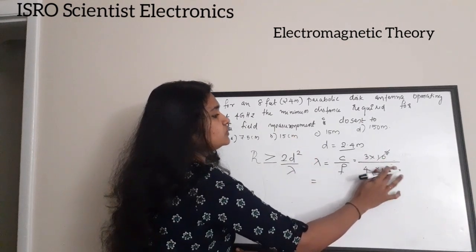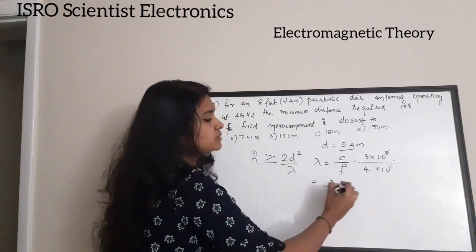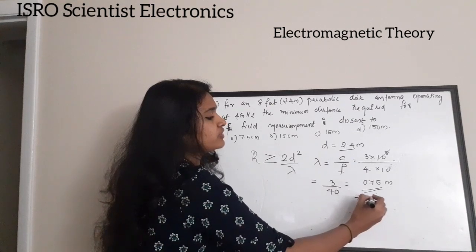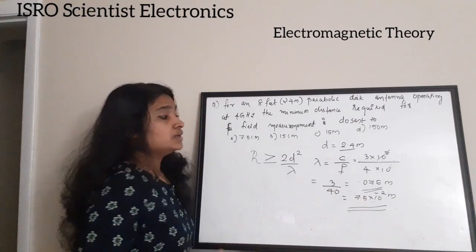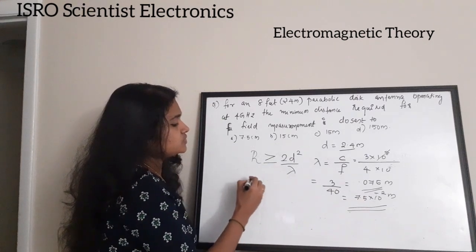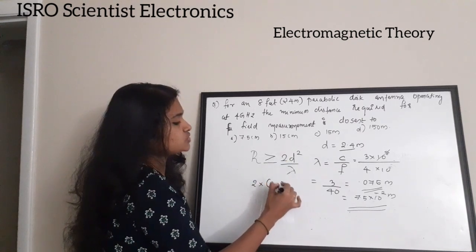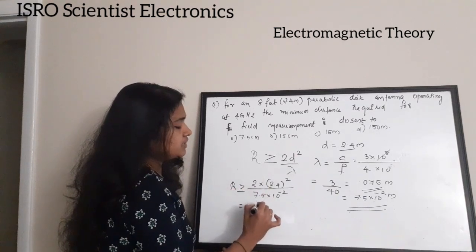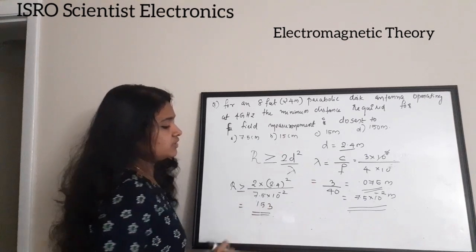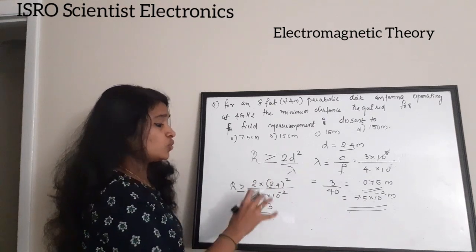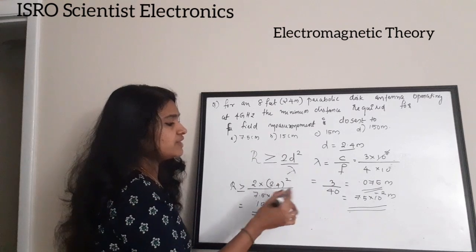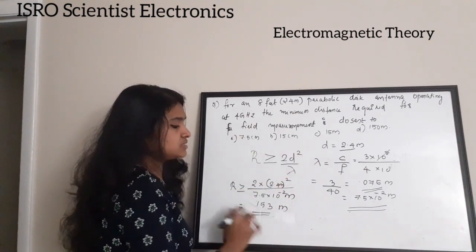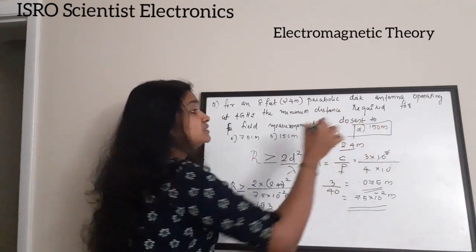Substituting: R = 2 × (2.4)² / 0.075 = 2 × 5.76 / 0.075 = 153 meters. The closest answer to 153 meters is option D: 150 meters. So the correct answer is option D.